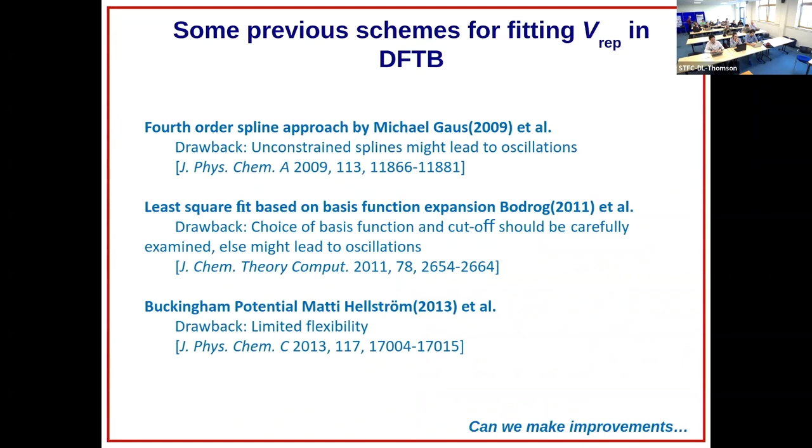There are of course alternatives out there. You have spline-based approaches by Gaus, you have least square fitting based on basis functions. The approach that we took, coming from a chemist background, was to use the Buckingham potential, a very well-known two-body potential that's normally used to describe ionic solids. They all come with drawbacks and strengths.